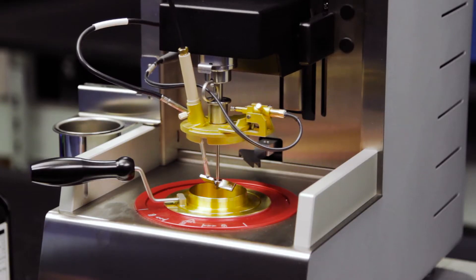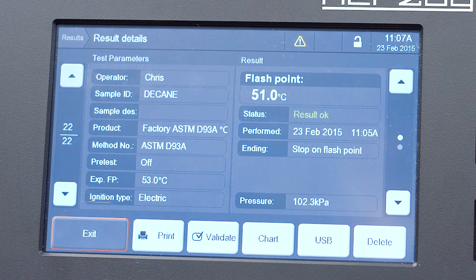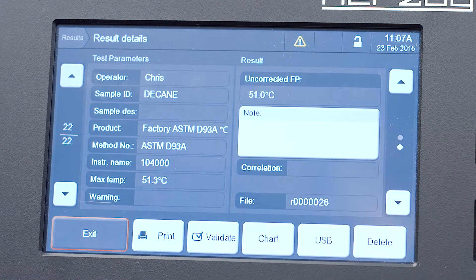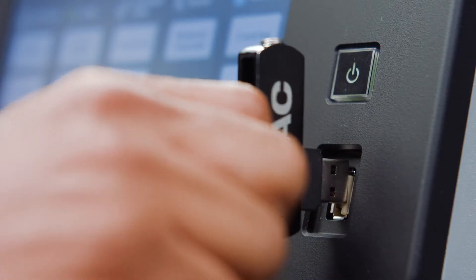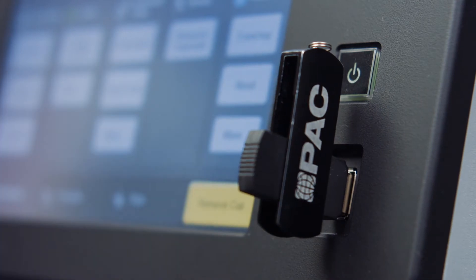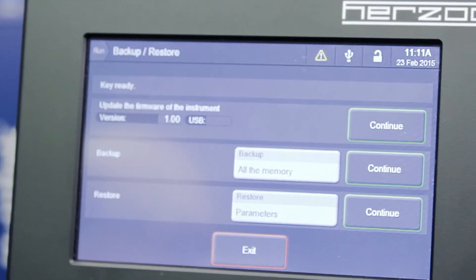OptiFlash also includes an ambient pressure sensor, which enables automatic flashpoint correction for ambient pressure. Its features, like LIMS communication and the USB drive, make it simple for users to export and share data.